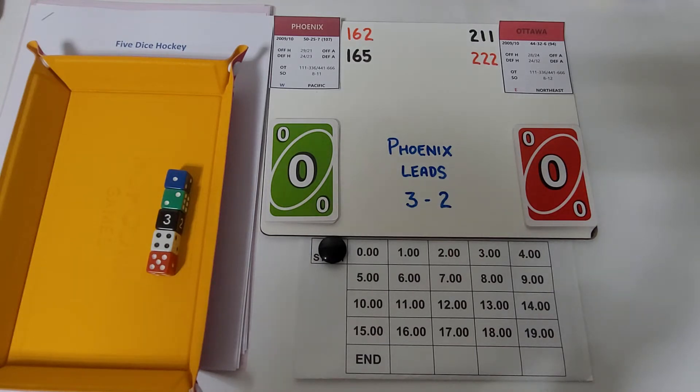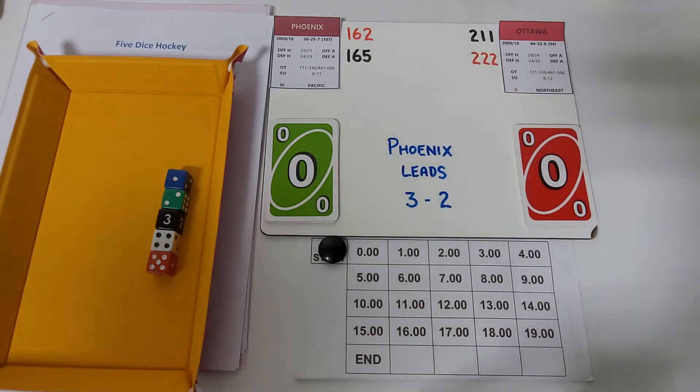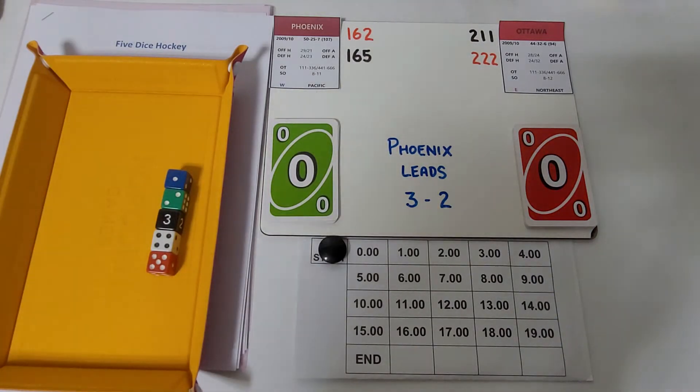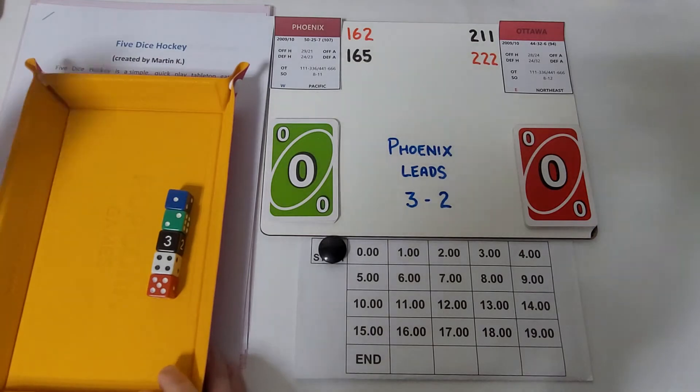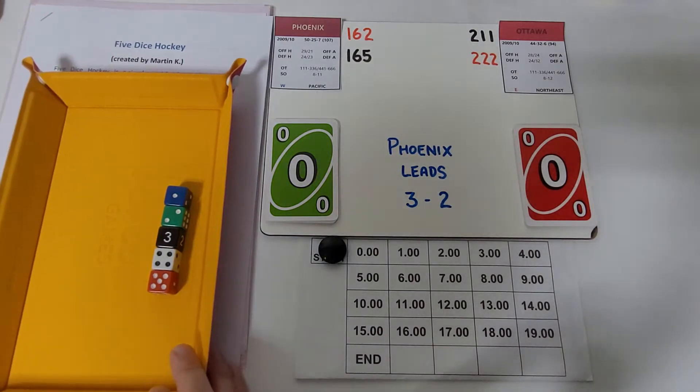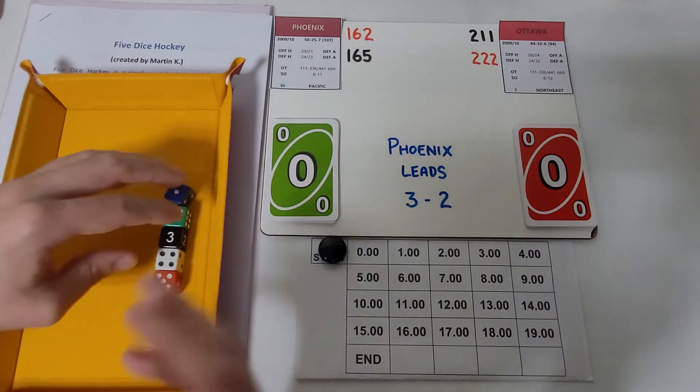Rounding out Phoenix's roster: Martin Hanzal, Vernon Fiddler, Taylor Pyatt, and Adrian Aucoin. Lauri Korpikoski was in there as well, Matthew Schneider, Robert Lang, and Ed Jovanovski. A who's who of NHL veterans.